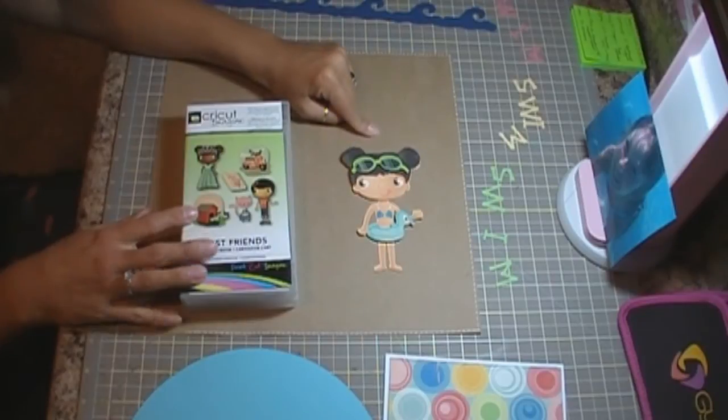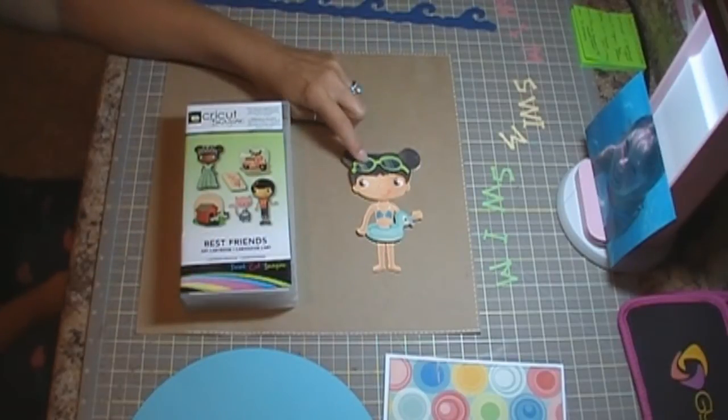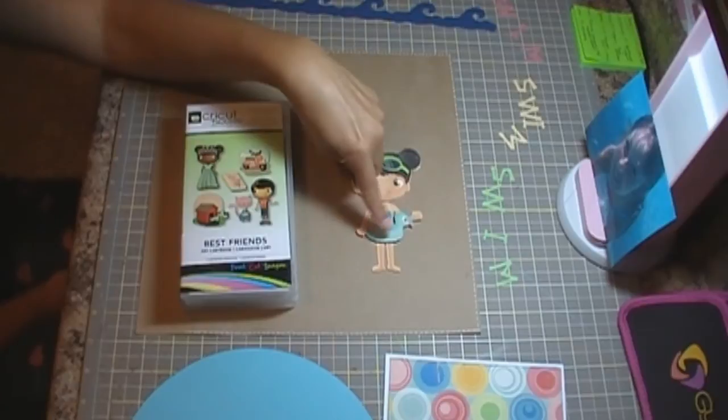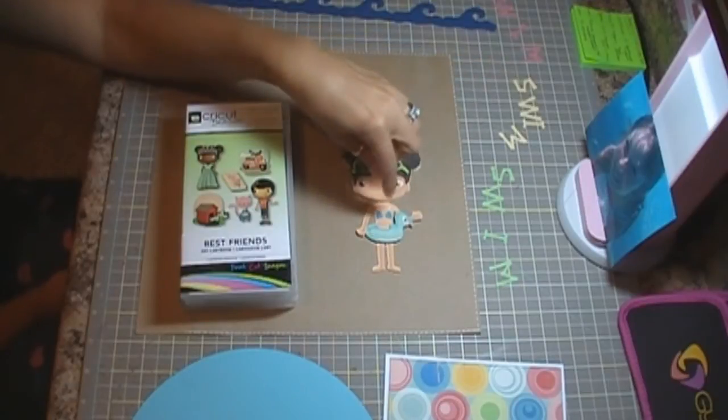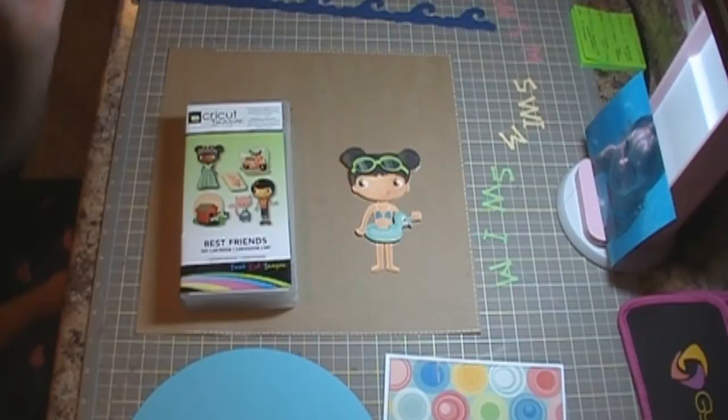Now, unfortunately, once again, my Imagine kind of let me down. I wanted to make this little duck tube or whatever a different color, and the swimsuit a different color, and the goggles a different color, but of course it wouldn't let me.